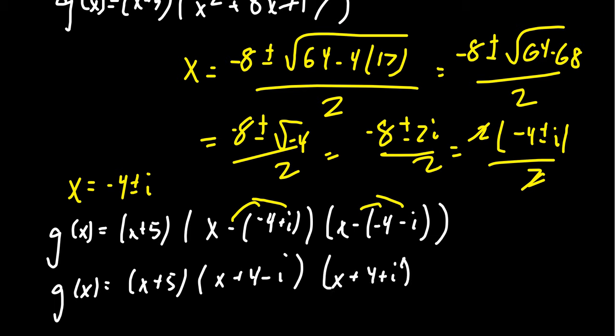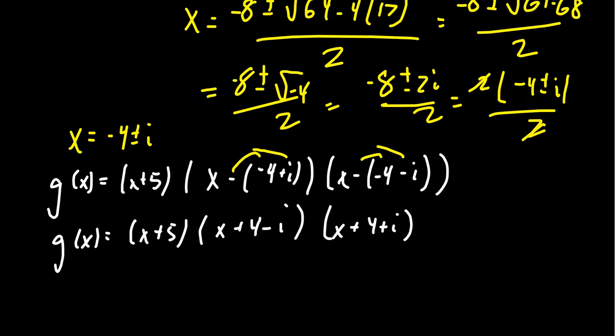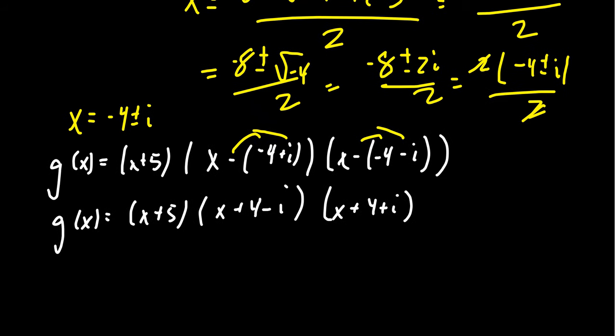This would be the complex factorization of this polynomial into linear factors. And in terms of the roots, the roots turned out to be x equals negative 5, negative 4 plus i, and negative 4 minus i. So we can find these, we can find the complex roots, we can find the factorization. Finding the roots and the factorization are one and the same thing.